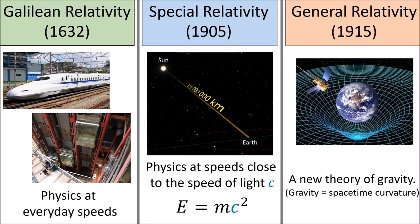In the last video we finished talking about Galilean relativity, which is the relativity of everyday life. Now let's talk about special relativity, which is the relativity that we observe when close to the speed of light.